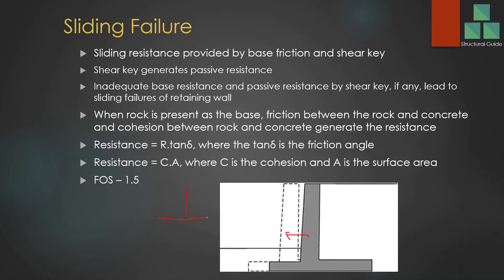If we have a retaining wall with a shear key, when the wall tends to slide, the shear key provides passive resistance. These are the two components that provide resistance: friction of the base and the shear key. Inadequate base friction resistance or inadequate passive resistance of the shear key could lead to sliding failure.